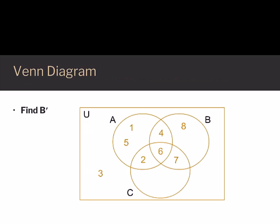Next, we'll use a Venn diagram to find B complement, which will be the set of numbers that are not in set B.